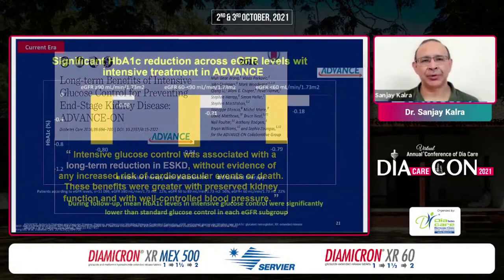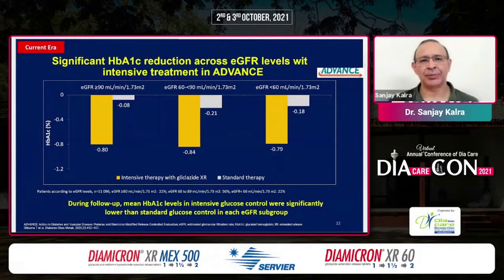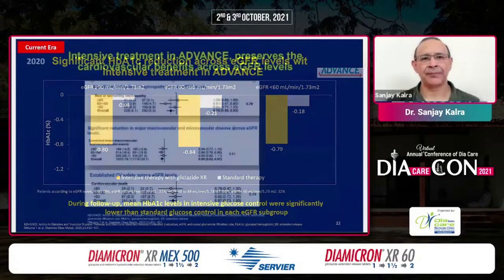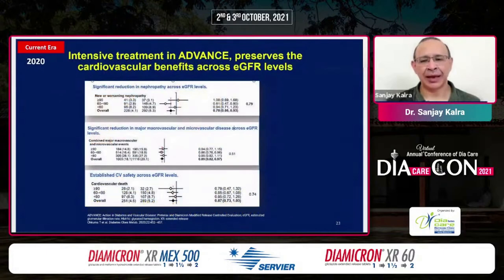Irrespective of the renal phenotype of the patient — whether the patient had macro-, micro-, or normoalbuminuria, whether the patient had a preserved eGFR or a mildly or moderately reduced eGFR — gliclazide was effective. It was able to reduce HbA1c. Do note that gliclazide is one drug that can be used even till an eGFR of 30. You do not have any change in pharmacokinetics of gliclazide XR in patients with renal impairment. Across all eGFR levels, you will have not only glucose-lowering benefit but also vascular benefit. The drug is CV-safe; it reduces macro and microvascular disease and nephropathy irrespective of the eGFR at which you started.